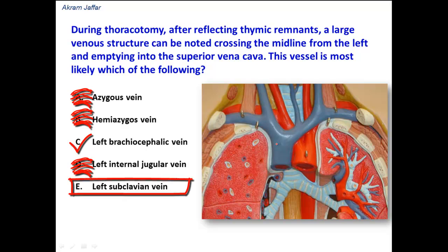Left subclavian vein is also the wrong answer for the same reasons just mentioned about the left internal jugular. The left subclavian vein drains into the left brachiocephalic, and then the left brachiocephalic drains into the superior vena cava. The left subclavian vein is not crossing the midline and is not located behind the thymus — it is located behind the clavicle, related to the upper border of the first rib.